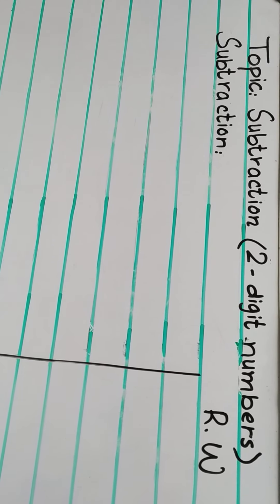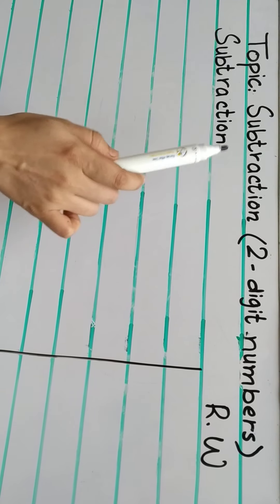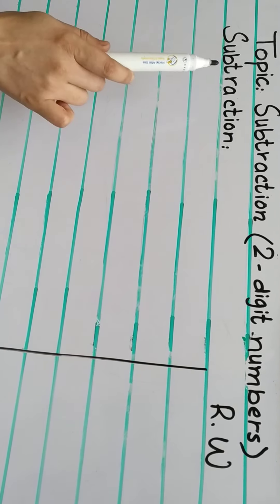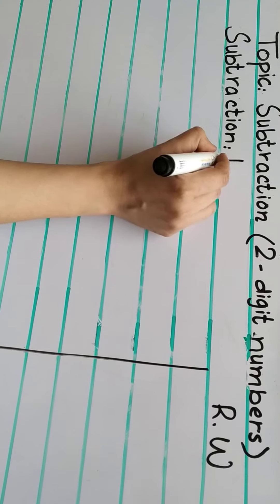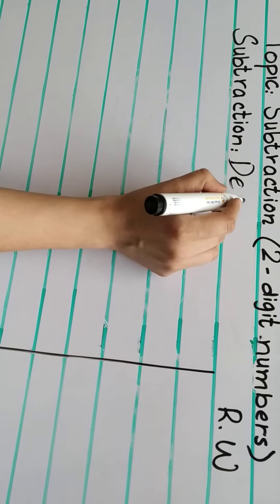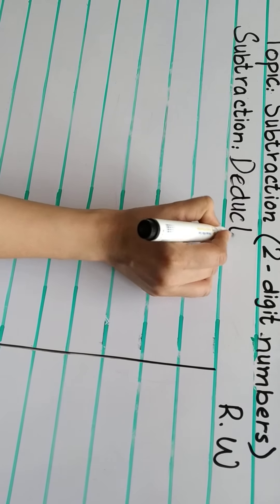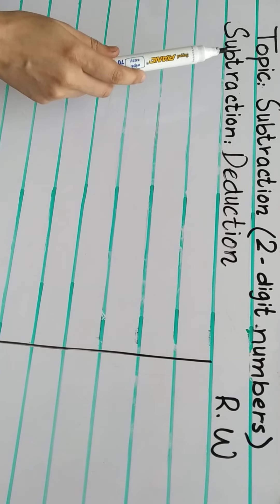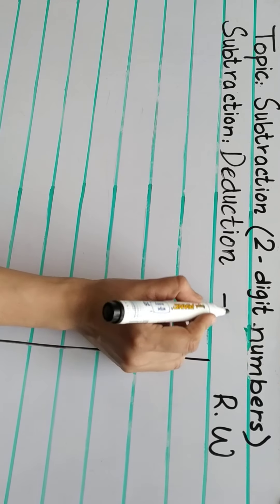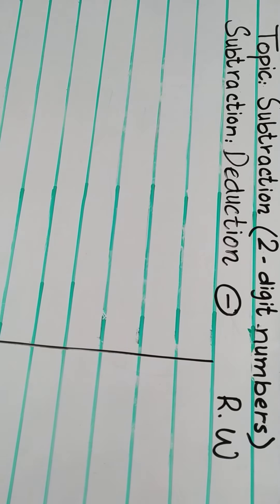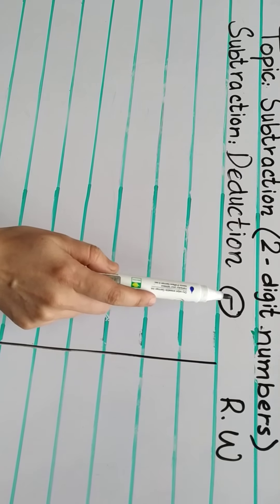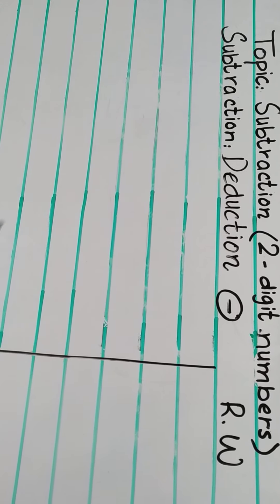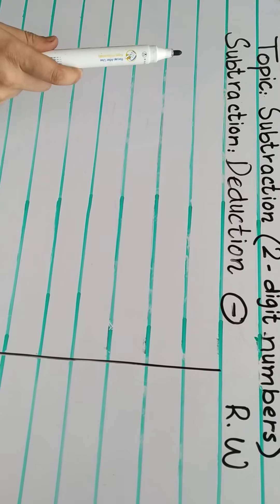Hello children. In this lesson we are going to learn about subtraction — subtraction of two-digit numbers. What does subtraction mean? Subtraction means deduction. It means to deduct one number from another. This is the minus sign, which is the sign of subtraction. So subtraction means to deduct one number from another.